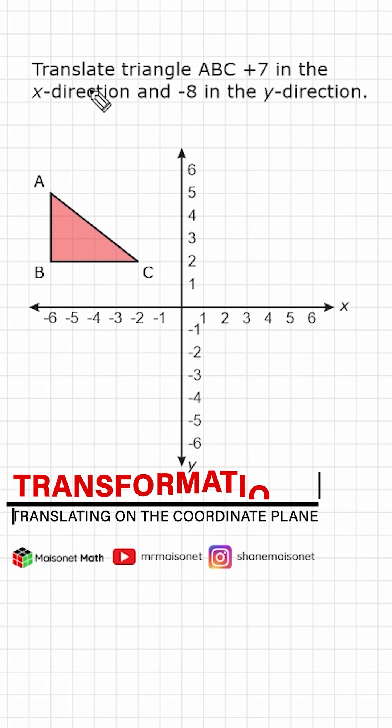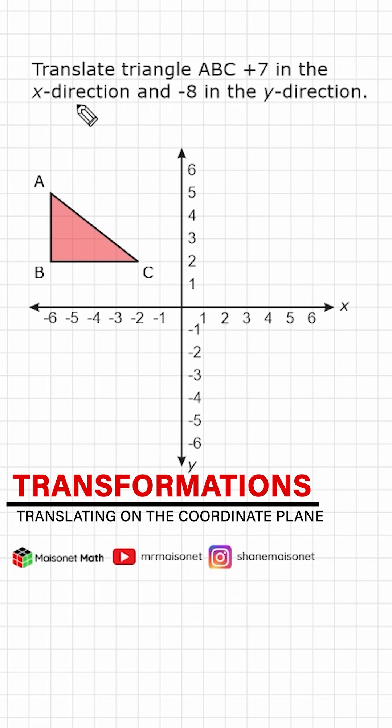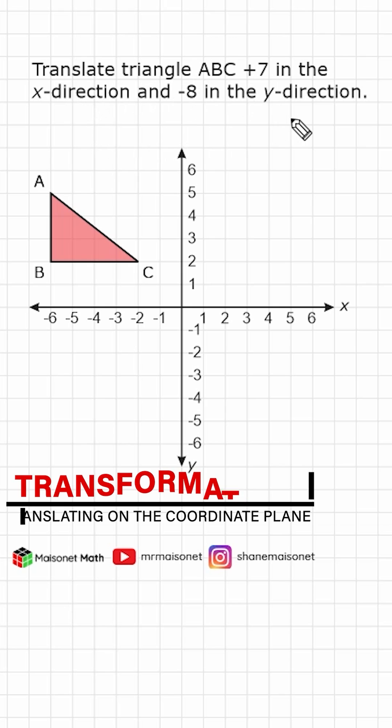All right, so we have a triangle that we have to translate positive 7 in the x direction and negative 8 in the y direction.